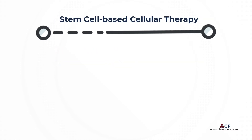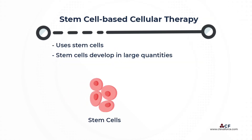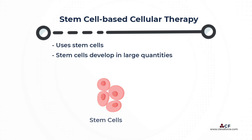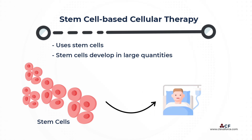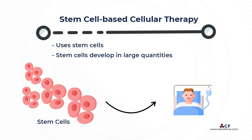Stem cell-based therapy uses stem cells rather than specialized cells because specialized cells in the body are difficult to obtain and have a limited capacity to multiply. Cellular therapy necessitates a large number of cells for transplantation into a patient's body. Therefore, stem cells are ideal for cell therapy because they proliferate in large numbers. They could be grown or developed into other functional cells outside of the human body, allowing for the production of a large number of cells needed for successful cell therapy applications.